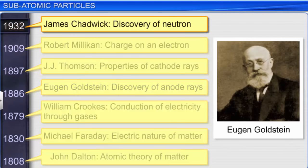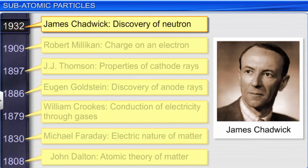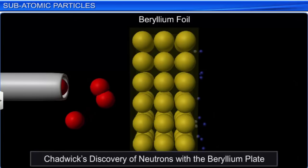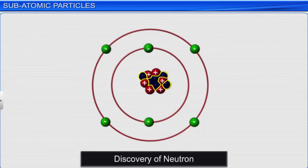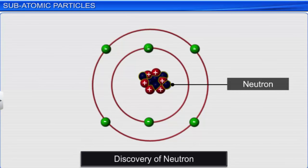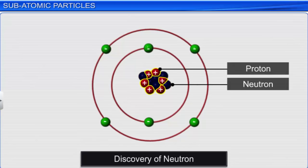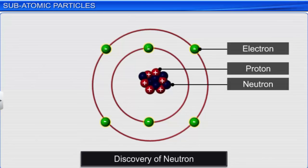Later in 1932, James Chadwick proved the presence of these heavy, neutral particles through a series of scattering experiments. On bombarding a beryllium plate with alpha particles, Chadwick observed the emission of a neutral particle whose mass was equivalent to that of a proton. He named this particle the neutron. After all subatomic particles were discovered, it was concluded that an atom is made up of protons (positively charged particles), electrons (negatively charged particles), and neutrons (neutral particles).